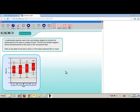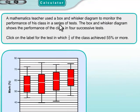So here is a typical question. A maths teacher used the box and whisker diagram to monitor the performance of his class in a series of tests. The box and whisker diagram below shows the performance of the class in four successive tests. Your job is to click on the label for the test in which three quarters of the class achieved 55% or more.